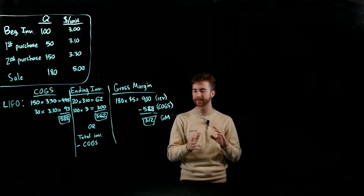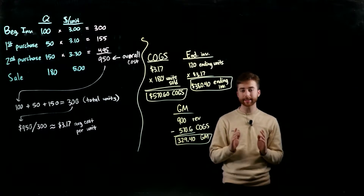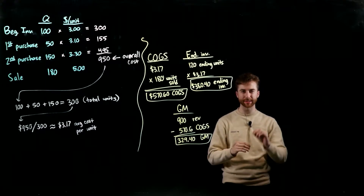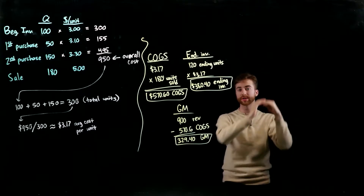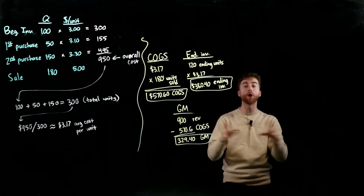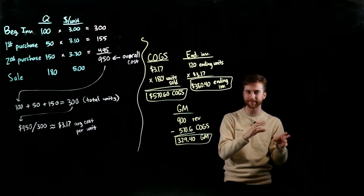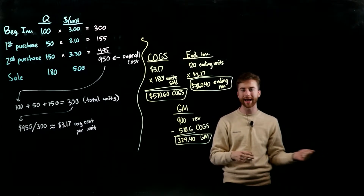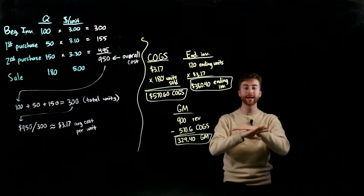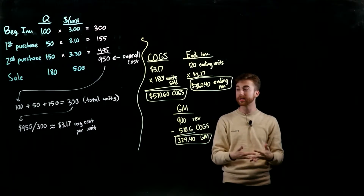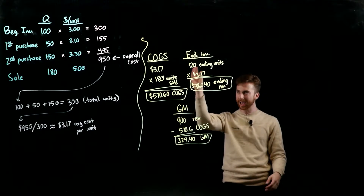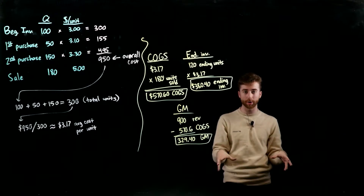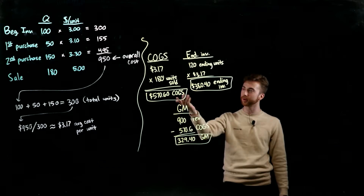For weighted average, instead of tracking oldest to newest or newest to oldest, we compute an average cost per unit for all inventory. The prices have changed and we have different quantities at different prices, so we come up with a single weighted average cost and value every piece of inventory at that rate. The first step is to find the overall cost for all inventory and divide by the total units.